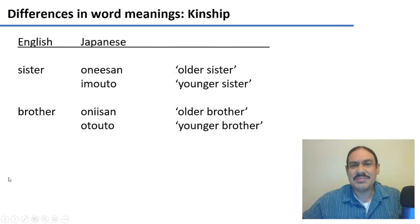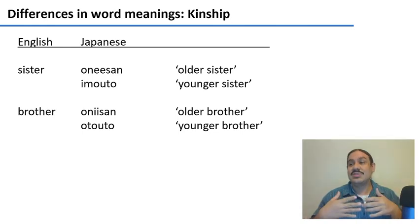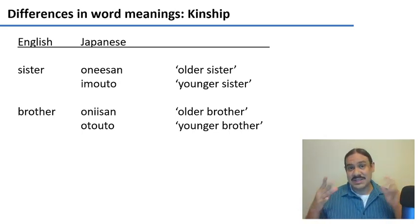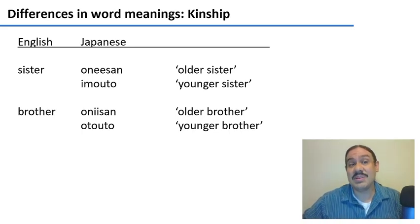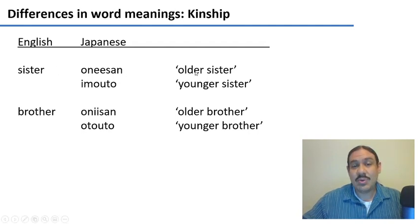Why would this happen? It happens mainly because human cultures are different, and so human cultures are going to have a need for one word or another depending on how they organize themselves. A very clear example of this is kinship systems, or how we call our family members. In English we have words like 'sister' and 'brother,' but in Japanese you distinguish between your older siblings and your younger siblings.